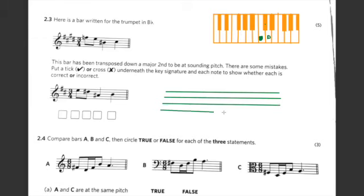This question is very wordy. It says here is a bar written for the trumpet in B flat. We don't really need to know that because they will actually give us the transposition. So this here is the important sentence.